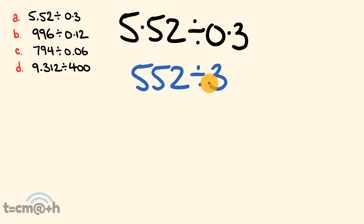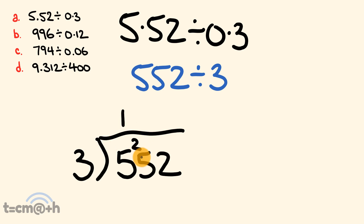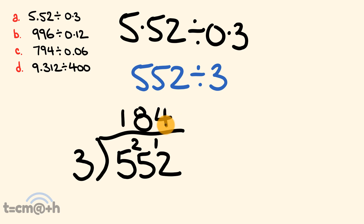So let's write it out: 552 divided by 3. First, 5 divided by 3 equals 1 with 2 left over. Moving along, how many times does 3 go into 25? 3 goes into 25 eight times — 3 times 8 is 24 — so there is 1 left over. Finally, how many times does 3 go into 12? 3 goes into 12 four times.